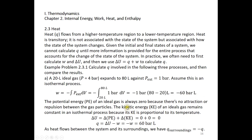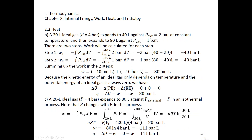Plugging in all the numbers, work W = −64 bar·liters. Therefore, for this ideal gas in the isothermal process, Q = −W = 64 bar·liters. We also know Q for the surroundings: Q_surroundings is always equal to −Q.